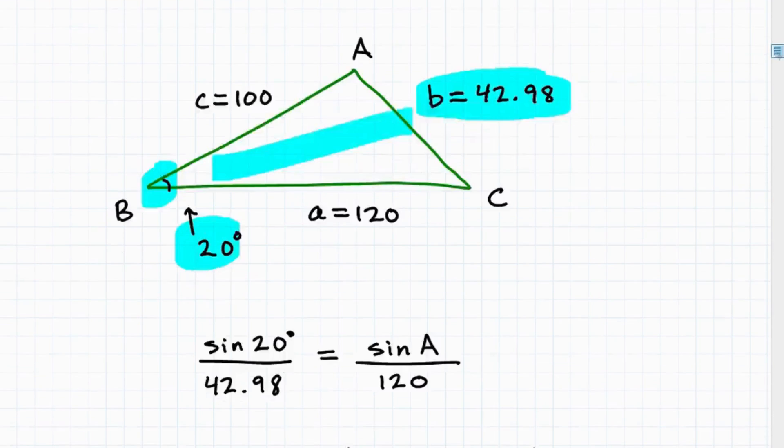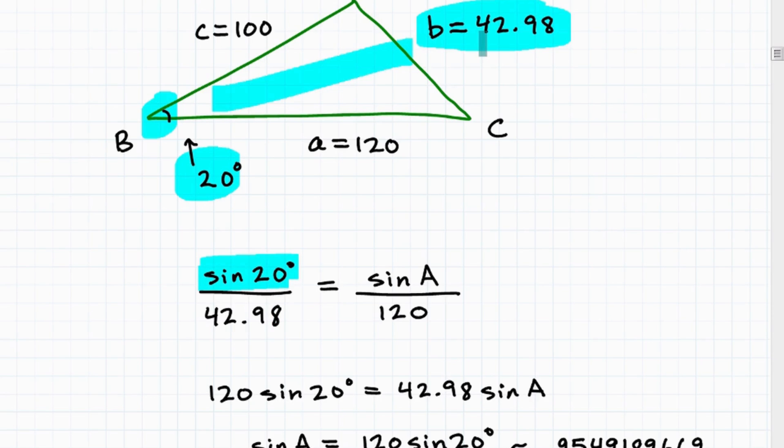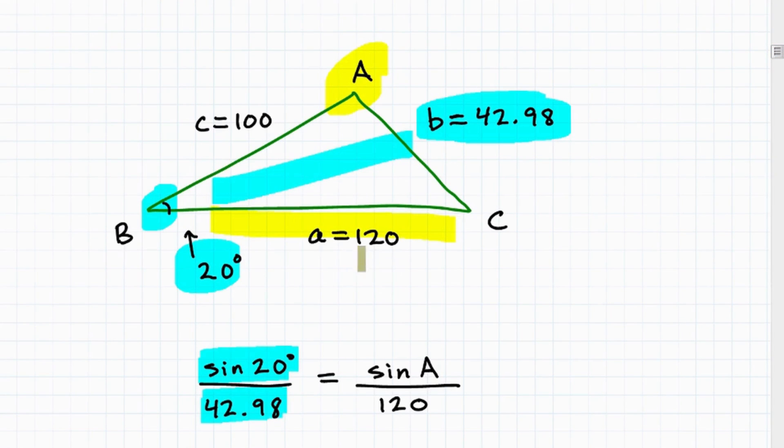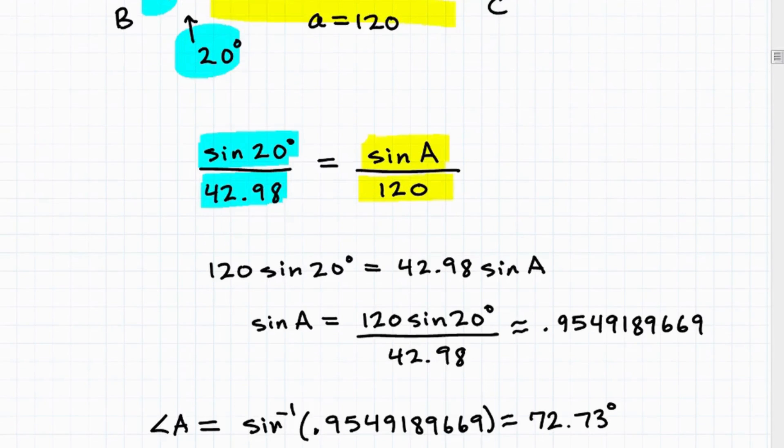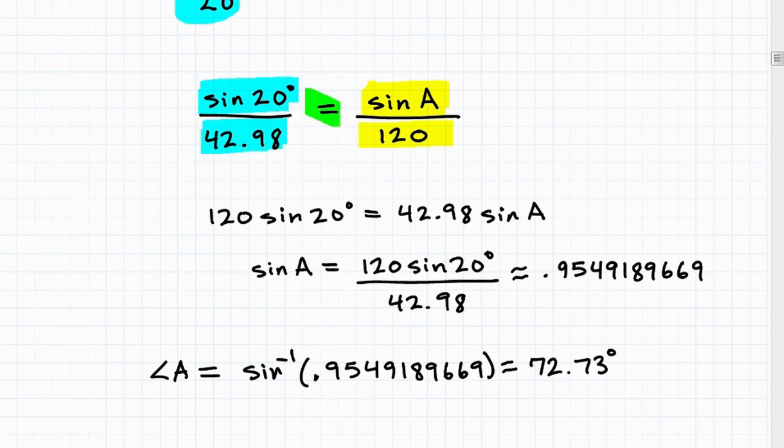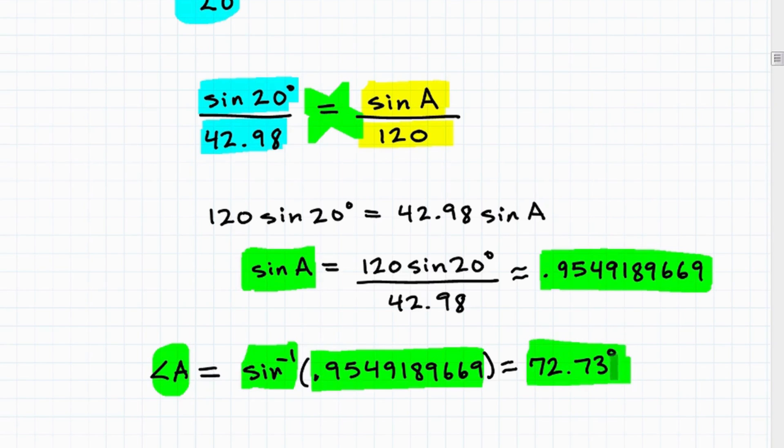This is the perfect ratio to set up for the law of sine. I have all three sides now. So sine of 20 over 42.98 equals sine A over 120. We get sine A equals 0.9549189669. But I don't want sine A, I want angle A, so I have to take the arcsine of this value. When I do that, I get 72.73 degrees.